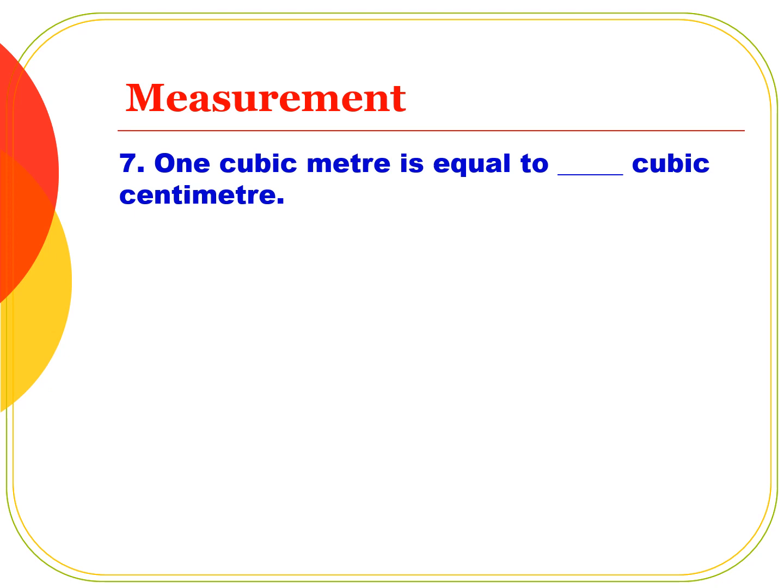One cubic meter is equal to how many cubic centimeters? Option A: 10⁹, Option B: 10³, Option C: 10⁶, Option D: 10⁶. The correct answer is 10⁶ cubic centimeters.